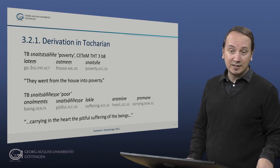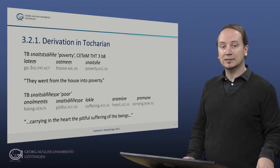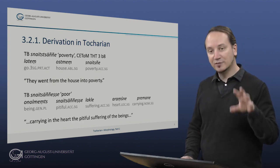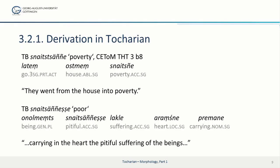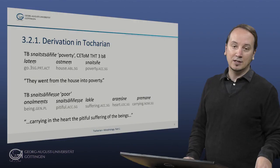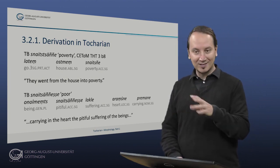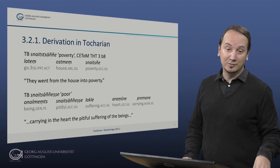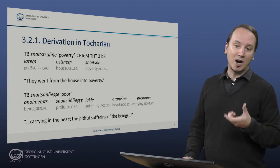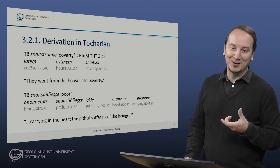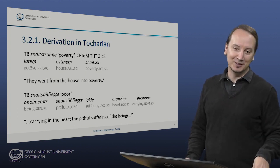The final example is from an Avadana, a Buddhist philosophical text: 'carrying in the heart the pitiful suffering of the beings.' Here we find 'sneitzünjesche', derived from 'sneitzne' or 'sneitzünje', used as an adjective meaning pitiful — very much like German 'arm', which can mean both poor and pitiful.